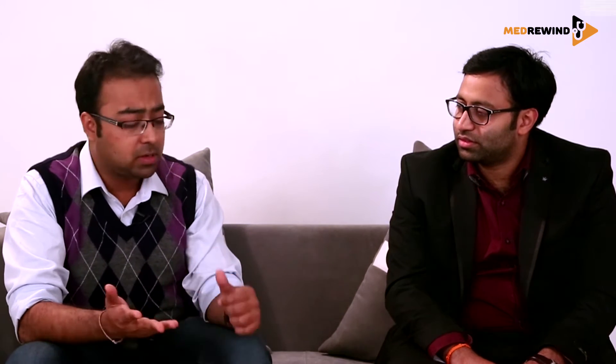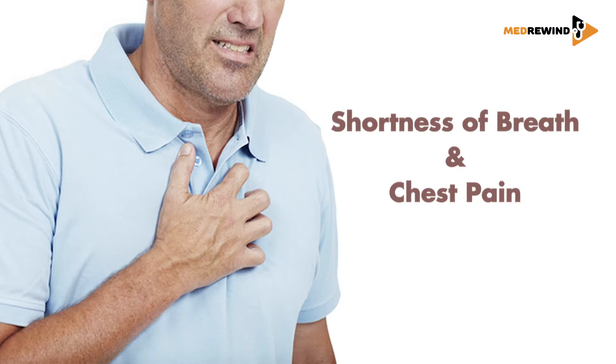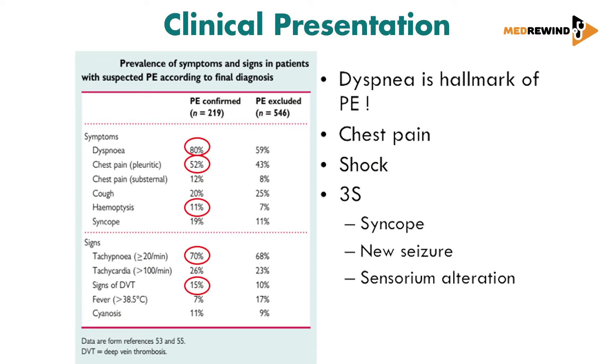Pulmonary embolism is also referred to as the great masquerader — it has varied presentations and is often missed. The most common presentation is shortness of breath and chest pain, and the most common sign is tachypnea. Patients can also present atypically with syncope, seizures, and altered sensorium, seen in up to five to ten percent of diagnosed cases.